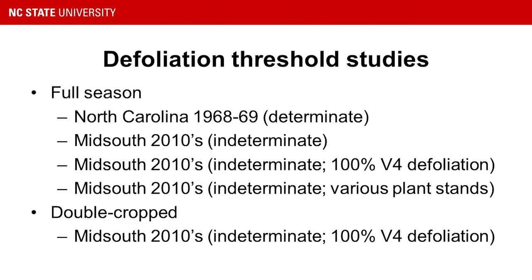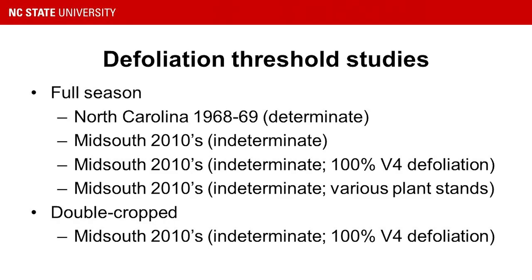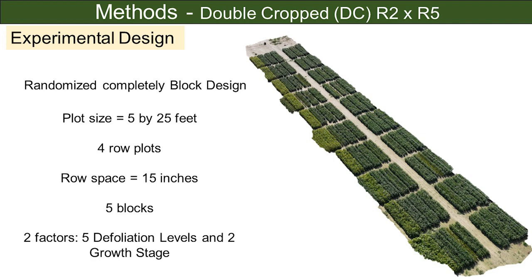The only defoliation study from North Carolina was done in the late 60s with a determinate growth habit — no indeterminate varieties. Good recent work has come out of the Mid-South, but it's all with indeterminate growth habits, irrigated beans, and good yielding soils not typical of our coastal plain environment. We used small replicated plots planted on 15-inch rows — more typical of North Carolina growers — using Rachel Vann's planting equipment.